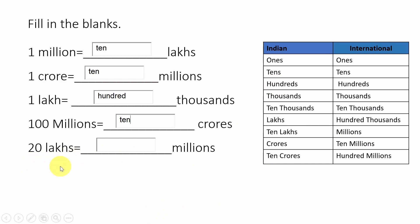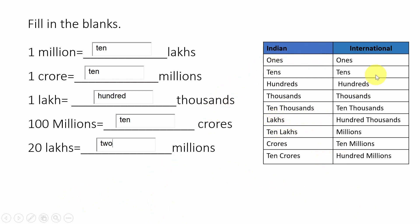Next: twenty lakhs equals how many millions? Think — one million equals ten lakhs, so twenty lakhs equals two millions. Just follow this table: one lakh equals hundred thousand, ten lakhs equals one million, one million equals ten lakhs, one crore equals ten millions, ten crores equals hundred millions.